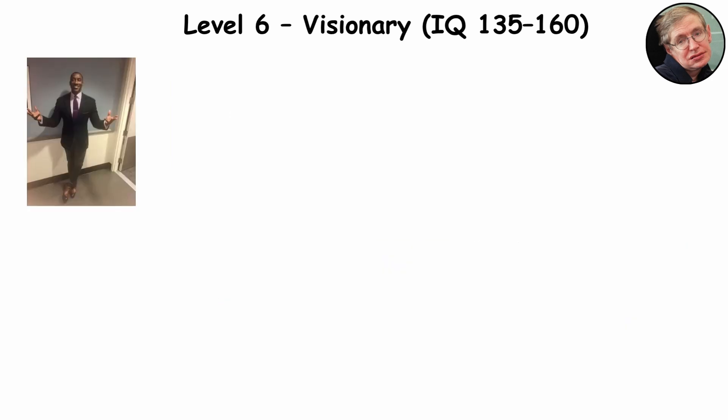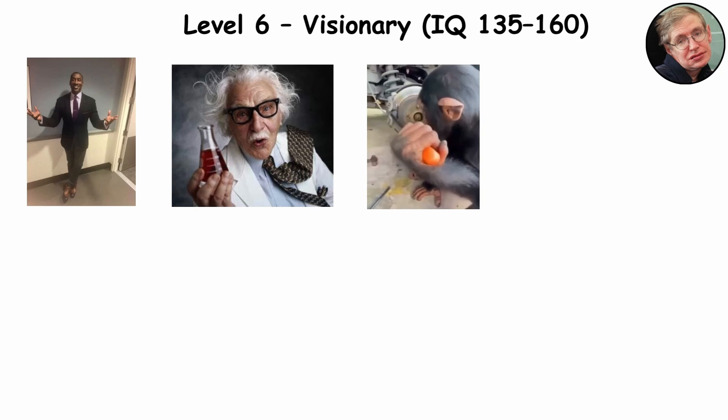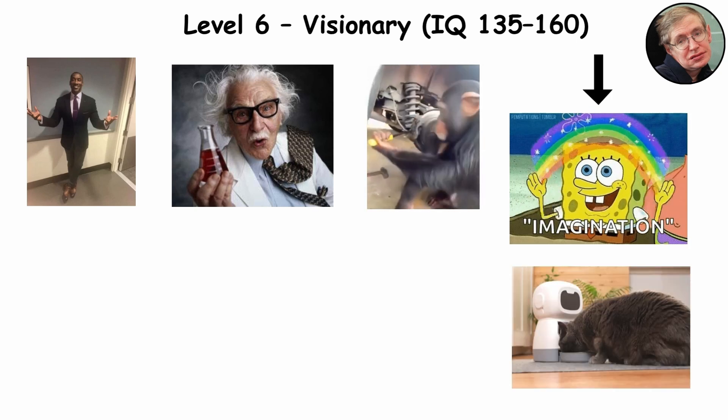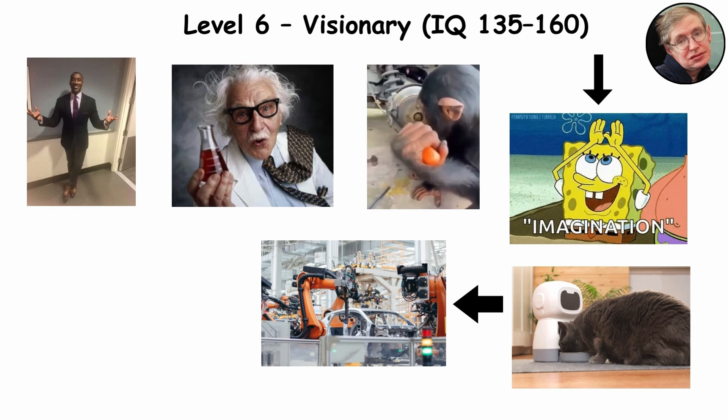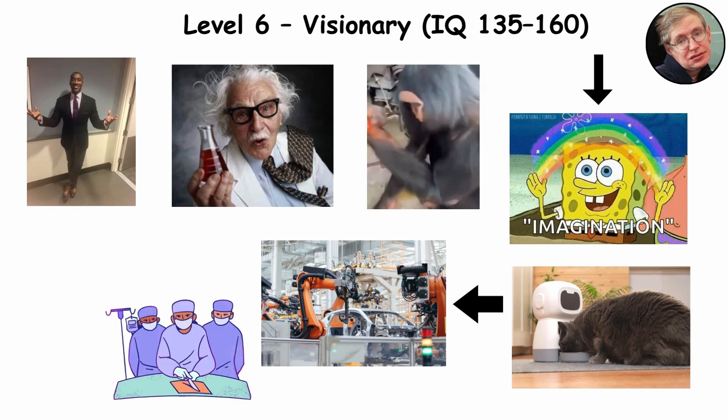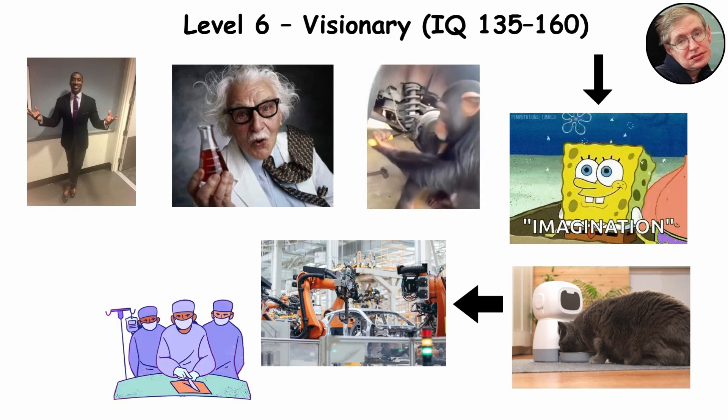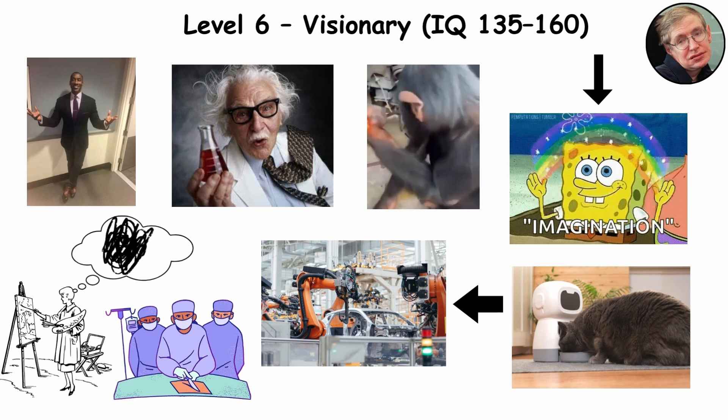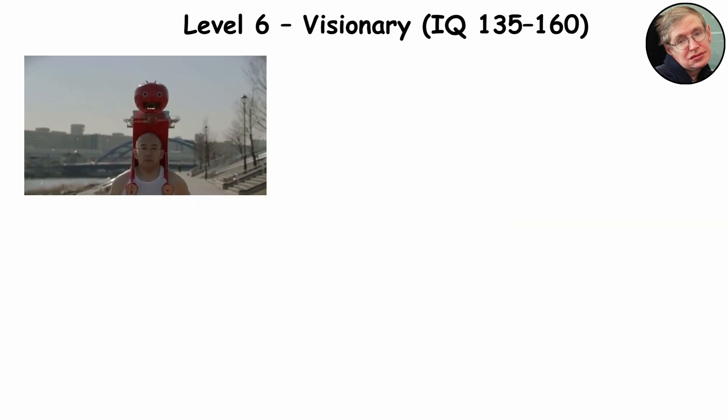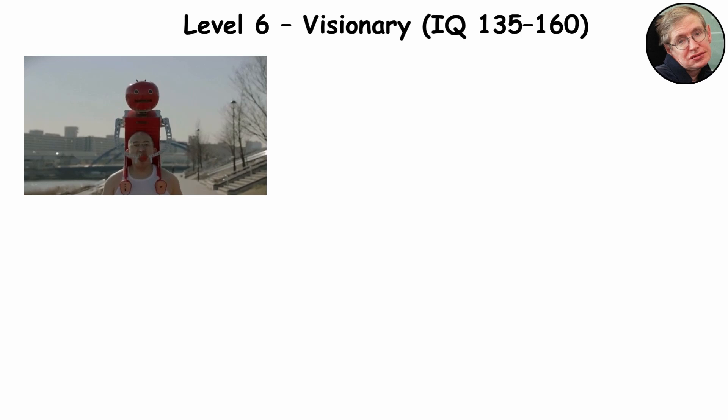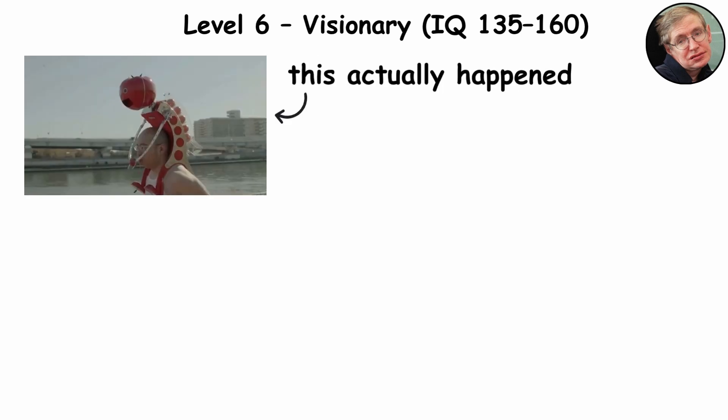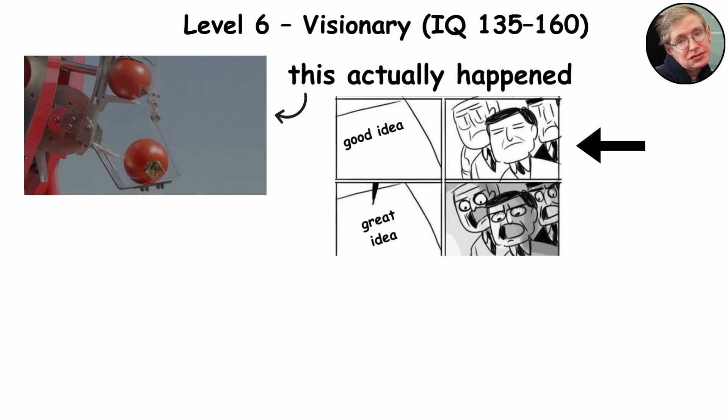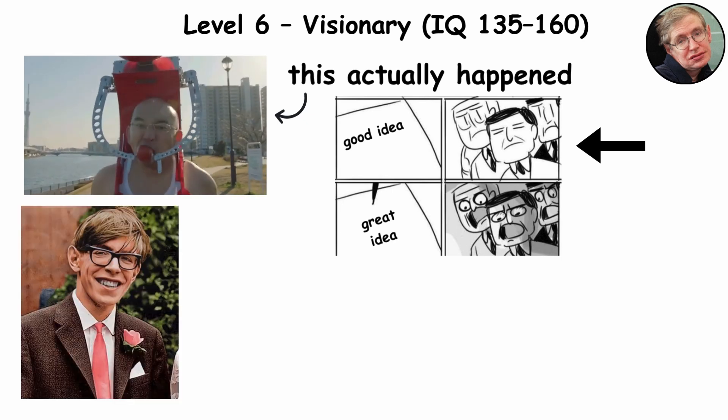As adults, these are the founders, inventors, and tinkerers who turn imagination into infrastructure. They once automated their cat feeder and accidentally started a robotics company. The surgeon who redesigned a tool mid-operation because it could be better. The artist who can't explain their process because they're still inventing it. They're the ones who invent a robot that sits on your shoulders and feeds you tomatoes. This actually happened. Or the ones who turn a good idea into a great one and make it profitable.